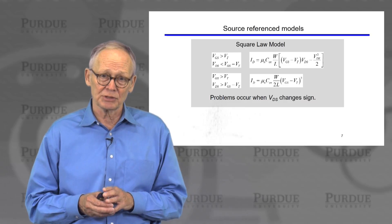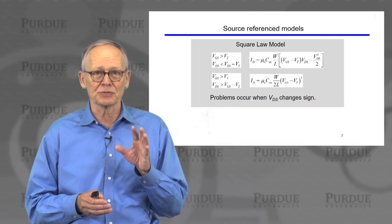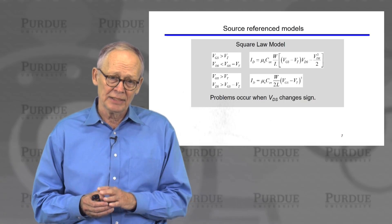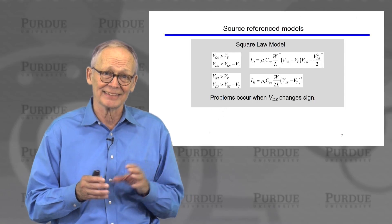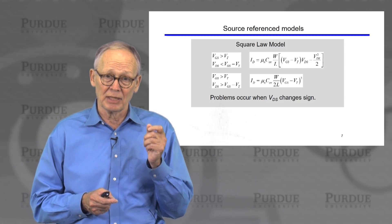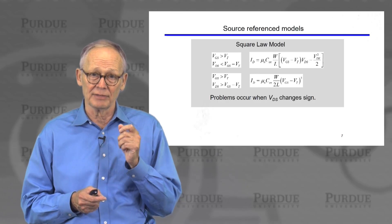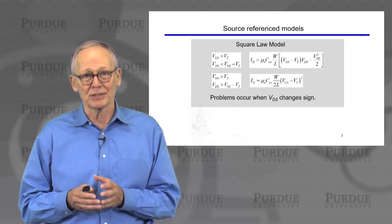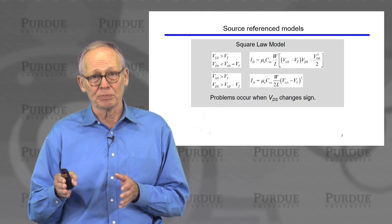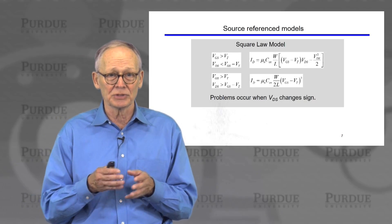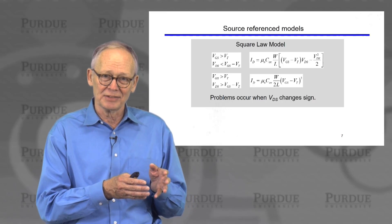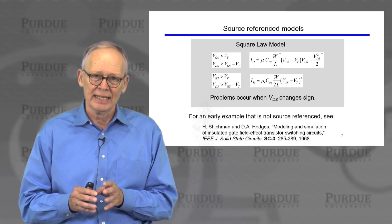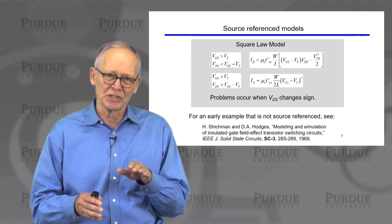Another limitation of the virtual source model is that it's focused on the source. That allowed us to understand simply how small MOSFETs operate, but there are issues. The quadratic square-law model of the MOSFET developed in the 1960s is also a source-referenced model — we talk about VGS, and everything depends on whether VGS is greater than VT. But problems occur when VDS changes sign. Most MOSFETs are symmetrical devices; during circuit operation the voltages might switch and one terminal might act as a drain at some times and the source at others. It's really best not to formulate models for circuit design as source-referenced models, because problems occur when you go through the origin and VDS switches sign.